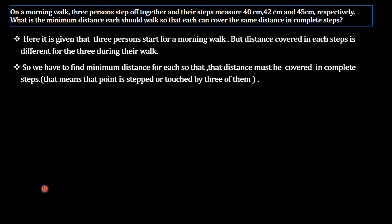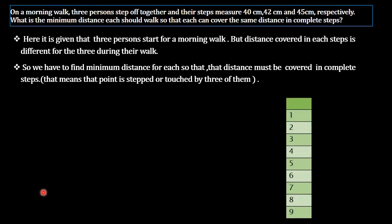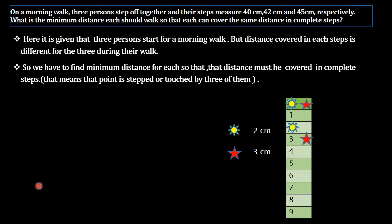For more clarification, consider a simpler example: two persons going for a morning walk where the first person covers 2 cm per step and the second person covers 3 cm per step. They start off together. The first person will be at 2 cm after step one, and the second person will be at 3 cm after step one.